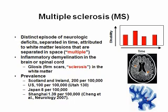Prevalence of MS is high in northern European countries such as Scotland and Ireland and the US, compared with other countries such as Japan and China. A prevalence ratio of women to men is 2.6 to 1, which means that 70% of MS patients are female.